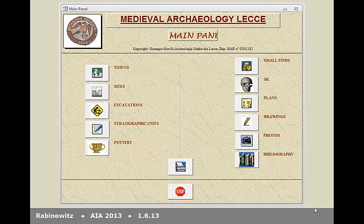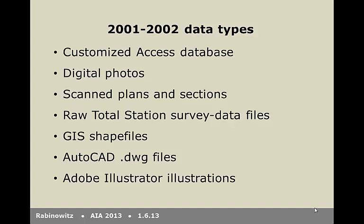There was also some experimentation with the geo-referencing of vertical photographs in ArcMap. The resulting digital dataset included the Access database, digital photographs of excavation contexts and finds, some of the excavation contexts geo-referenced with attendant auxiliary files, scanned plans and sections, raw survey data files downloaded from the total station, AutoCAD DWG files, GIS shape files, and illustrations of finds done in Adobe Illustrator.